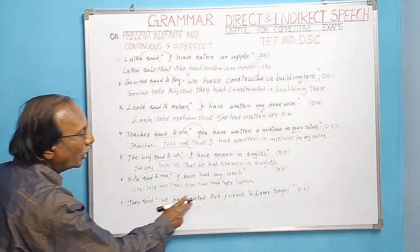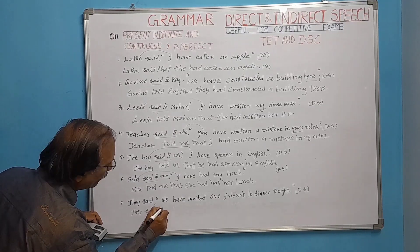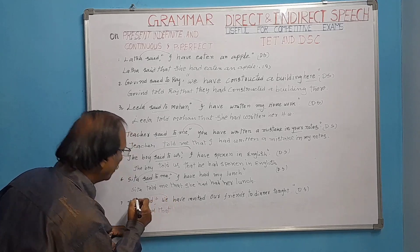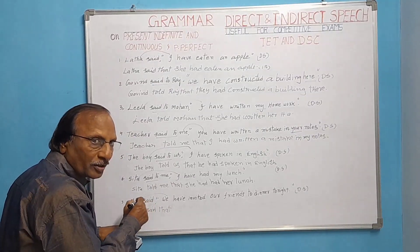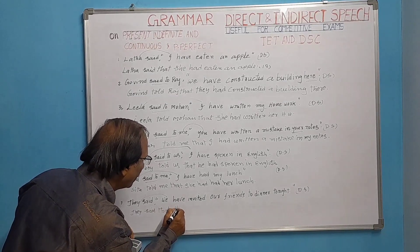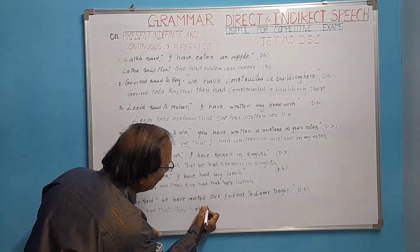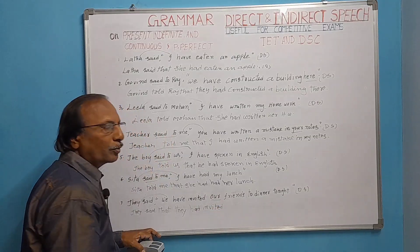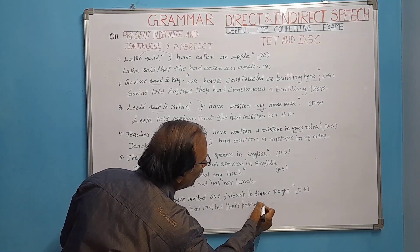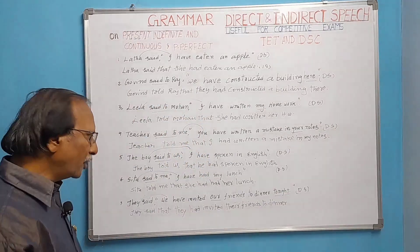They said, 'We have invited our friends to dinner tonight.' 'We' refers to they, so the third person plural subject remains 'they.' 'Have invited' changes to 'had invited.' 'Our friends' becomes 'their friends.' 'Tonight' changes to 'that night.' Result: They said that they had invited their friends to dinner that night.